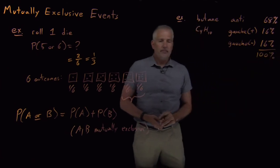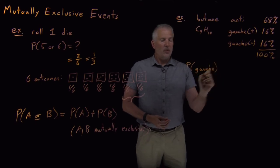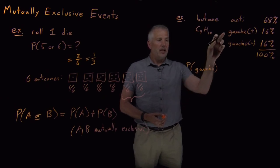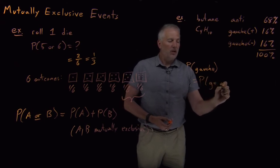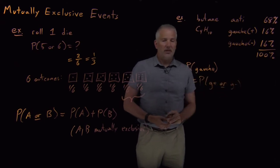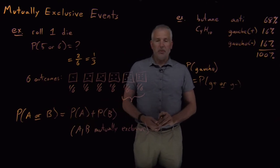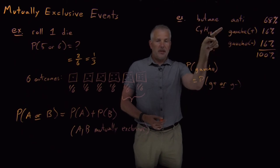We'll learn later on in the course how we can calculate numbers like that. But those probabilities add up to 100%. And let's say the question we want to know is overall what's the probability that a butane molecule selected randomly will be in one of the two gauche configurations, i.e. probability that it's in the gauche plus or the gauche minus configuration. So this is that same type of problem. If it's in the gauche plus configuration, it can't also be in the gauche minus and vice versa.